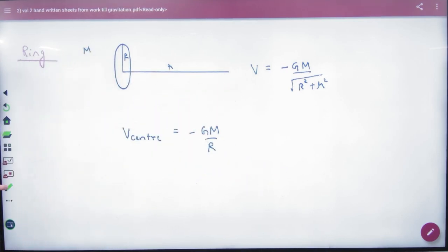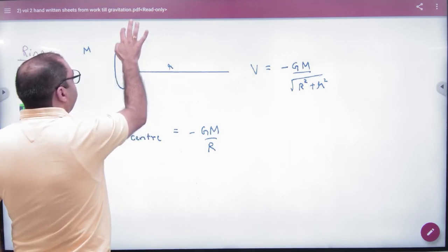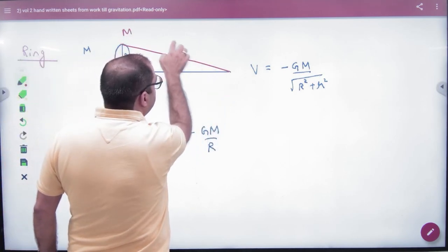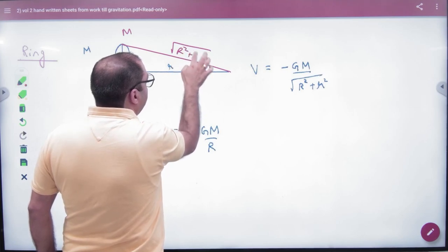V minus g into mass of ring, and this will be under root of r square plus r square.